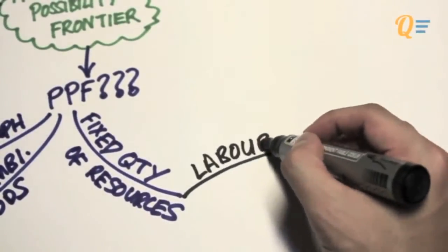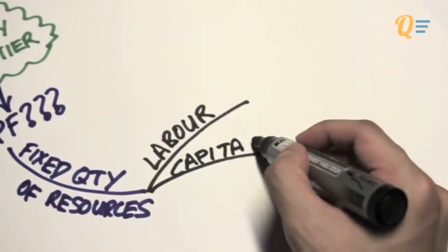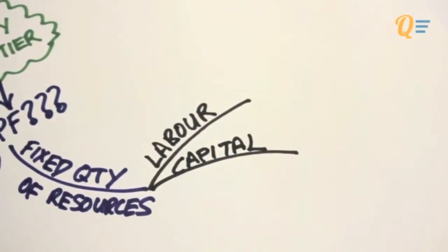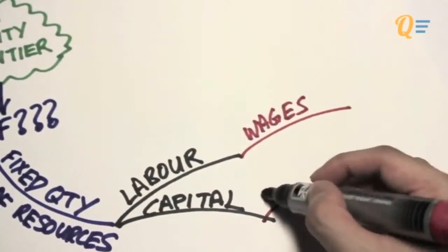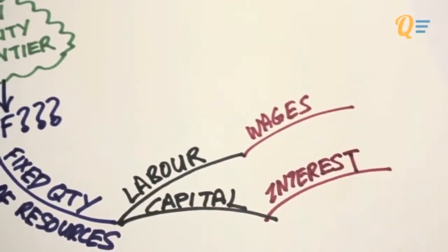For the resource part, we are just going to focus on two: labor and capital. What's going to cost an economy? Labor is going to be paid in wages, and capital is going to be paid in interest.